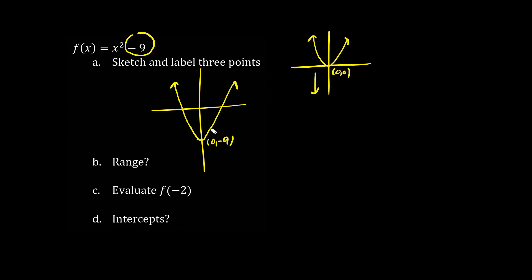So when x equals 1, we have 1, 1 squared is 1, minus 9 is negative 8. When x equals 2, we have 2 squared, which is 4, minus 9 is negative 5. Finally, we have 3, 3, 0, because 3 squared is 9, minus 9 is 0.